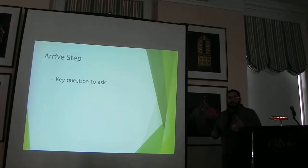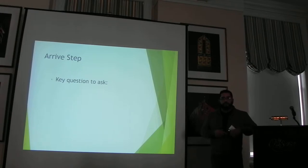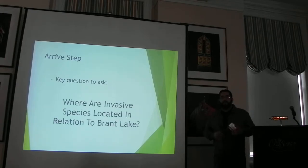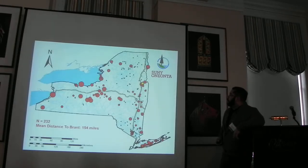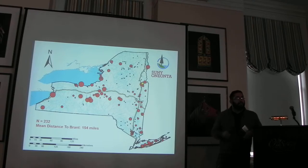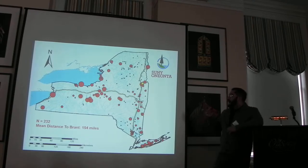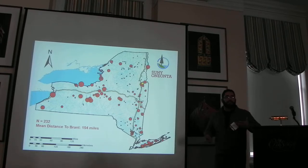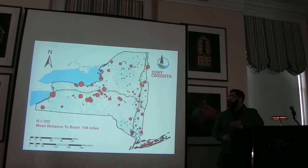For the arrival step, the key question we need to ask is: where are the invasive species located in relation to Brant Lake? Over here we have a distribution map of lakes in New York State that have invasive species that Brant does not. Currently, Brant Lake only has Eurasian watermilfoil and curly leaf pondweed. The size of the circles represents how many different invasive species are in a given lake — a proxy for intensity. A lot of this information isn't groundbreaking: we know the Finger Lakes, Oneida Lake, and the Great Lakes are hubs.